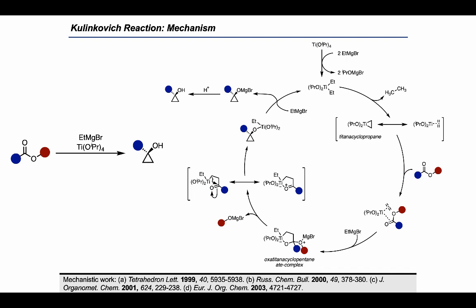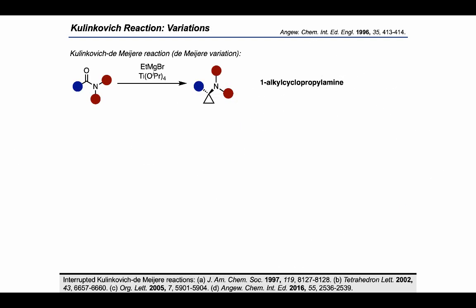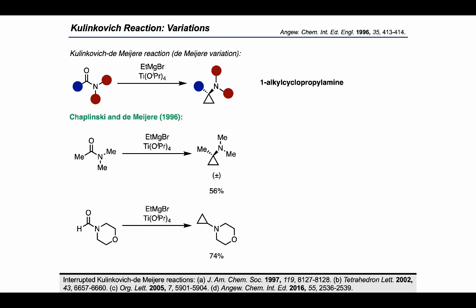Aside from the parent Kulinkovitch reaction, there are a number of related variants that follow the same mechanistic framework. The first one is called the Kulinkovitch-De Meijere reaction, or the De Meijere variation. Here we're using an amide instead of an ester, which results in the formation of a cyclopropylamine rather than a cyclopropanol. In a foundational paper from Chaplinsky and De Meijere, the authors show examples where acetamides or formamides could be converted into cyclopropylamine products in good yield.